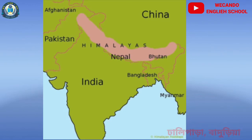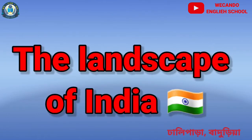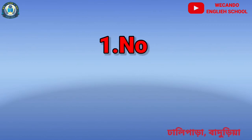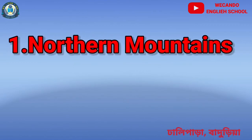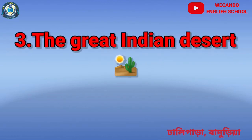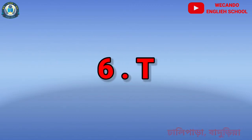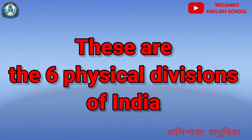At the topmost northern side of our country there are mountain ranges, and those mountain ranges are known as the Himalayas. The landscape of India can be divided into six physical divisions: northern mountains, northern plains, the great Indian desert, the peninsular plateau, and the coastal plains and islands.